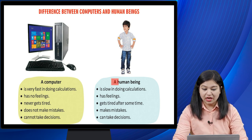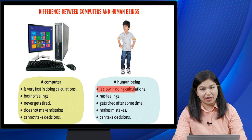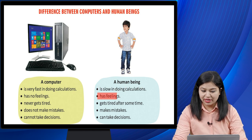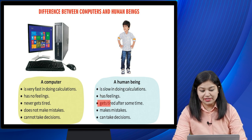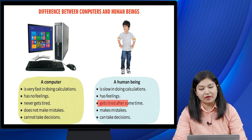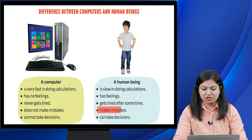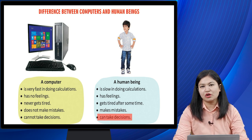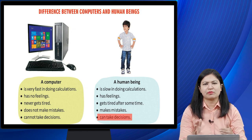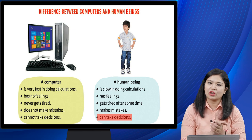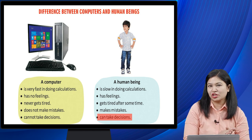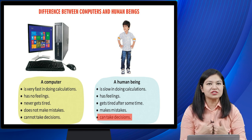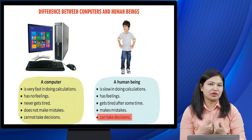Human being has feelings, is slow in doing calculations, gets tired after some time, makes mistakes, and can take decisions. Human being ki calculation slow hoti hai, uski feelings hoti hain — woh happy, sad, hurt feel karta hai — woh tired bhi hota hai aur mistakes bhi karta hai.